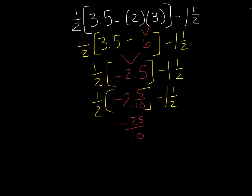Not to bore you, but again, I am now moving all of my other steps down. Now I can multiply across. I can multiply my 1 times negative 25 to get me negative 25 and 2 times 10 to get me negative 25/20. I now know that I will be taking that number and subtracting it by 1 and 1/2.